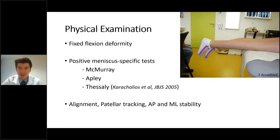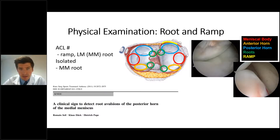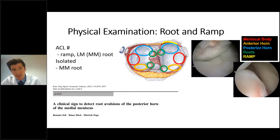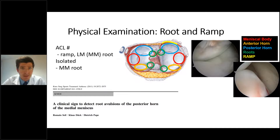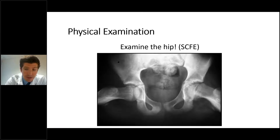For the more recently described root and ramp lesions, the clinical picture is limited and non-specific. Only one clinical sign of medial meniscal root avulsions has been described by Seil and colleagues. One should be aware of these lesions in the setting of an ACL tear, although a medial meniscal root tear is most often found as an isolated lesion. And in a child, never forget to check the hip — it wouldn't be the first case of SCFE or a tumor in the hip region that ends up on the operating table for a knee arthroscopy.